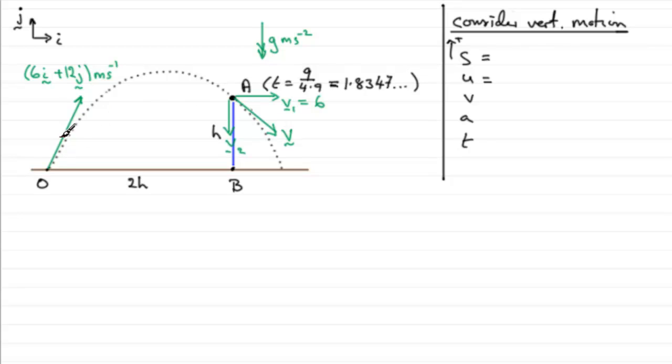V is what we're trying to find, which is V2 here. A acts downwards, so it's against our positive sense, so it would be minus G, minus 9.8. And T is this decimal, or you could use the exact value 9 over 4.9. So what equation could we use to get V2? It's going to be V equals U plus AT.